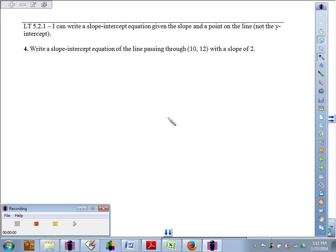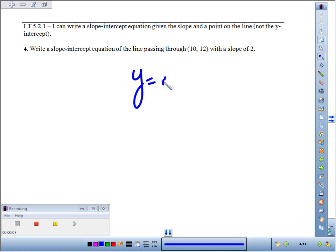Number four: we're going to write a slope-intercept equation for a line passing through (10, 12) with a slope of 2. With the slope-intercept equation, we need two things: the slope and the y-intercept.